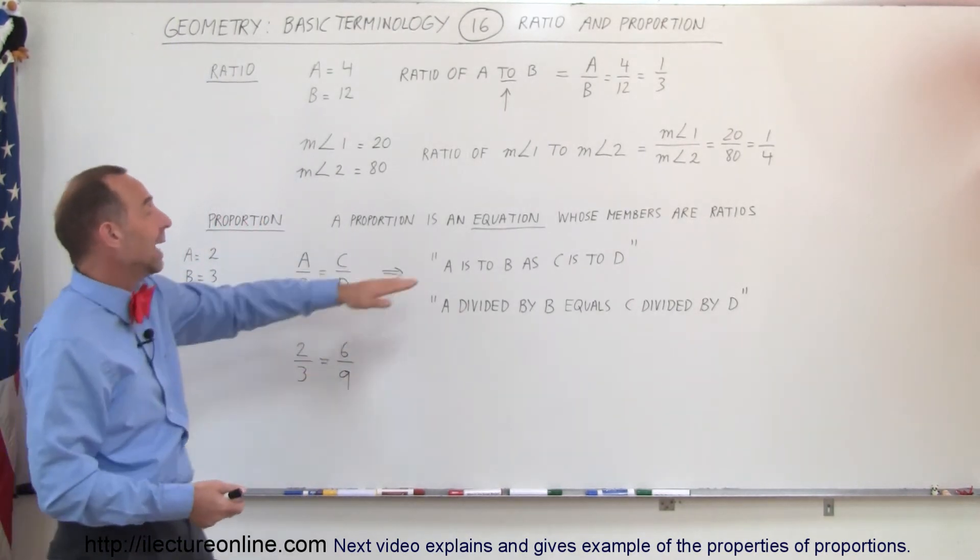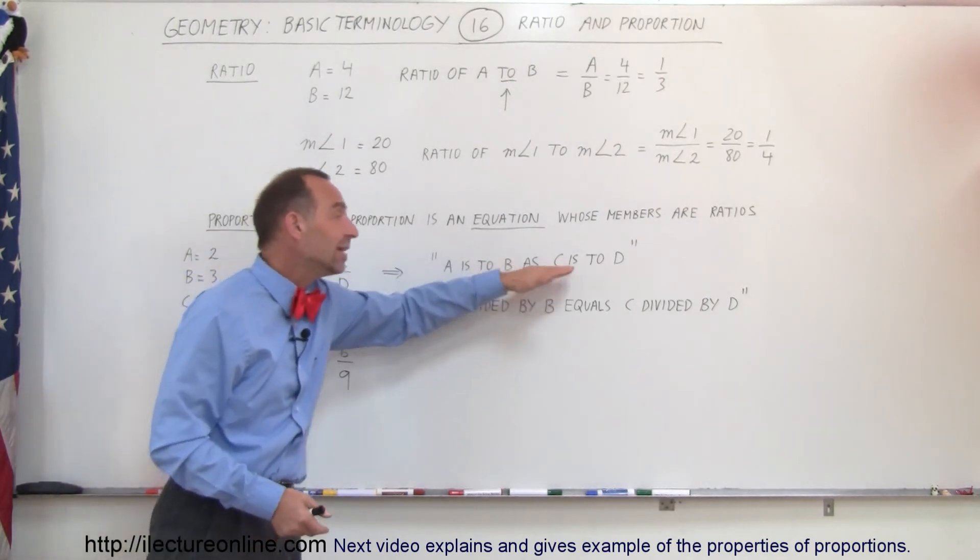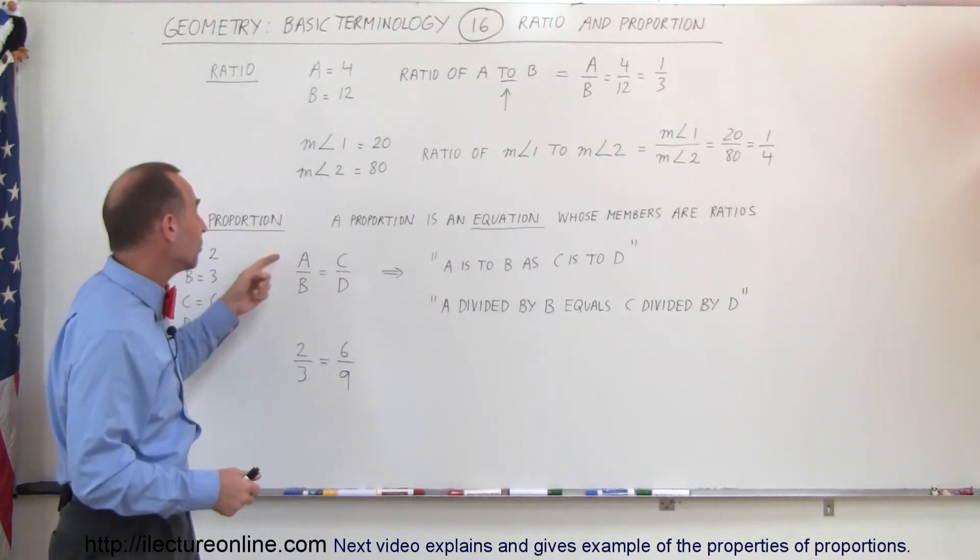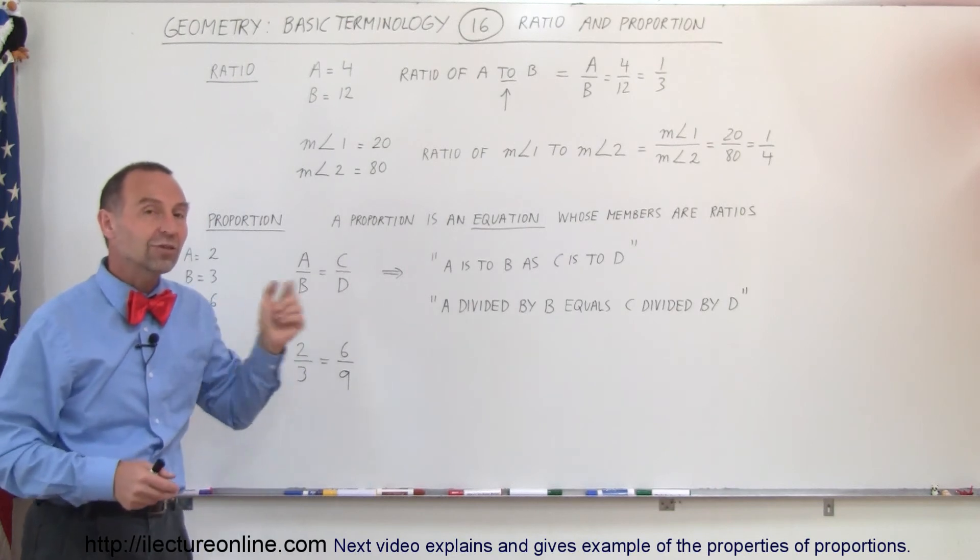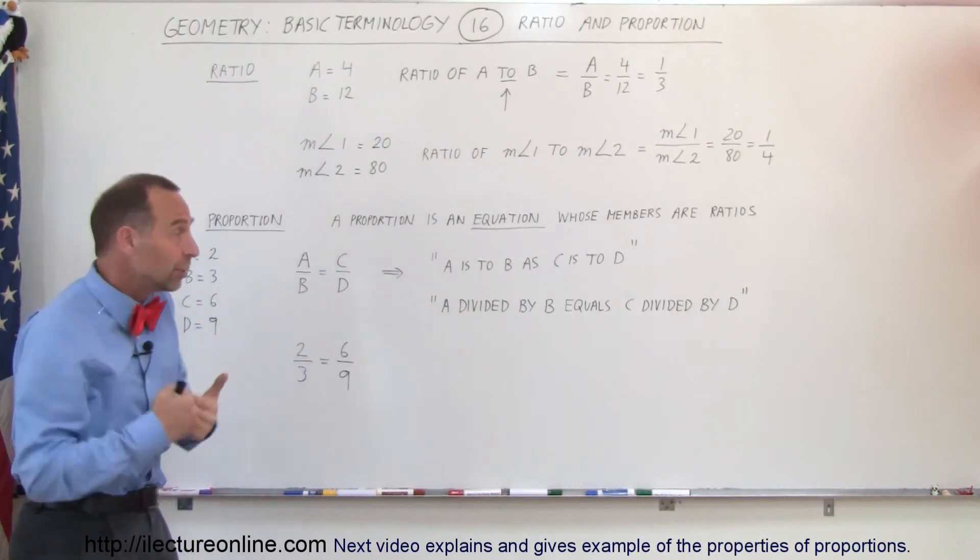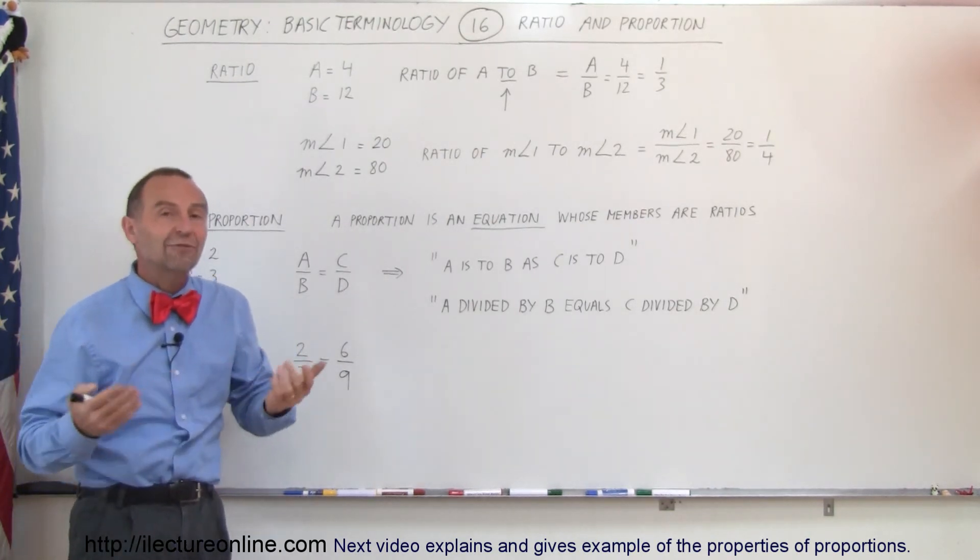Or we can simply say that A is to B as C is to D. So when we compare A to B and we compare C to D, and those two comparisons are equal to each other, then we have a proportion.